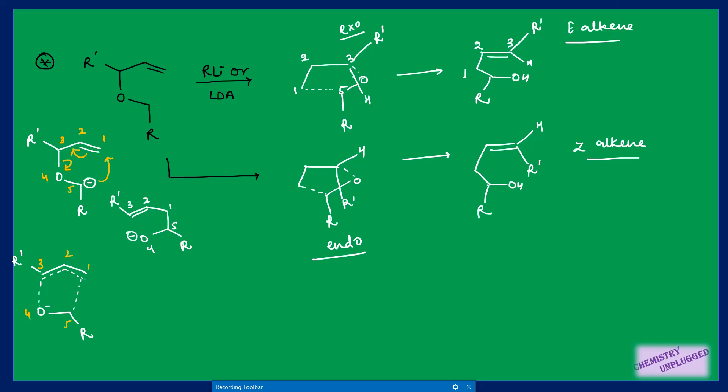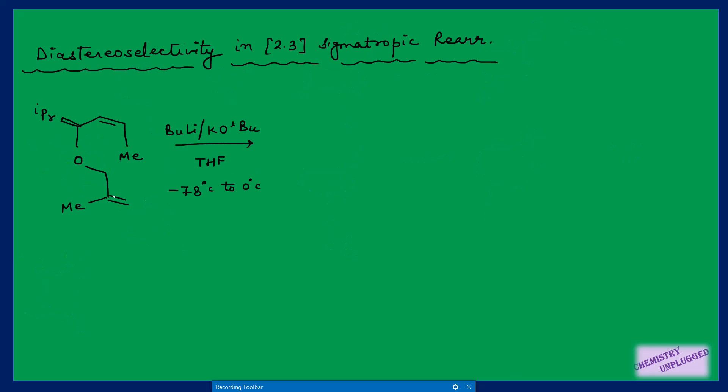The key outcome to remember is that in [2,3]-sigmatropic rearrangement you get E-alkene preferentially. This is a very important point. Next we will discuss diastereoselectivity in [2,3]-sigmatropic rearrangement, which will also help you in solving many problems.